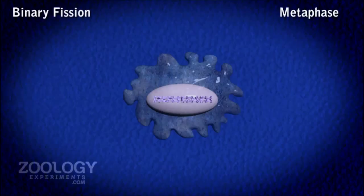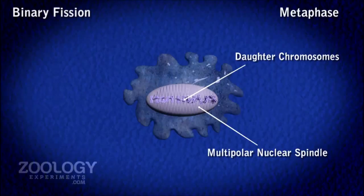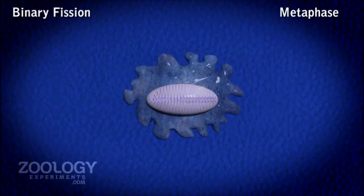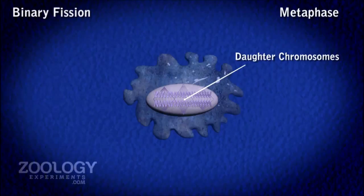Metaphase. The metaphase is distinct by the arrangement of chromosomes at the equator region. Each chromosome splits longitudinally and becomes paired. Daughter chromosomes on each side become attached to the spindle fibers arising from multiple poles situated within the nuclear membrane.